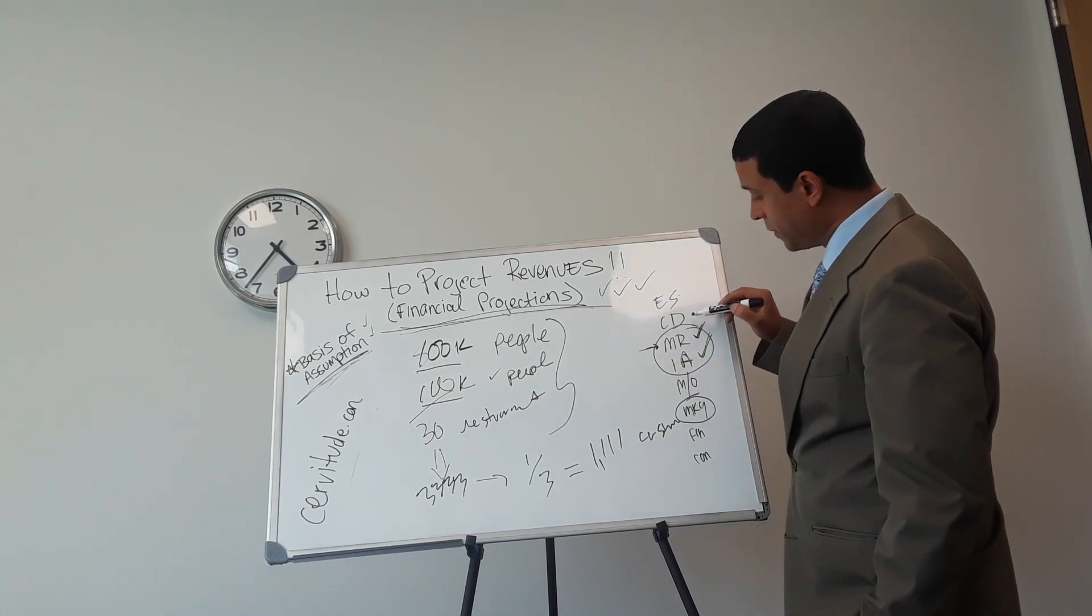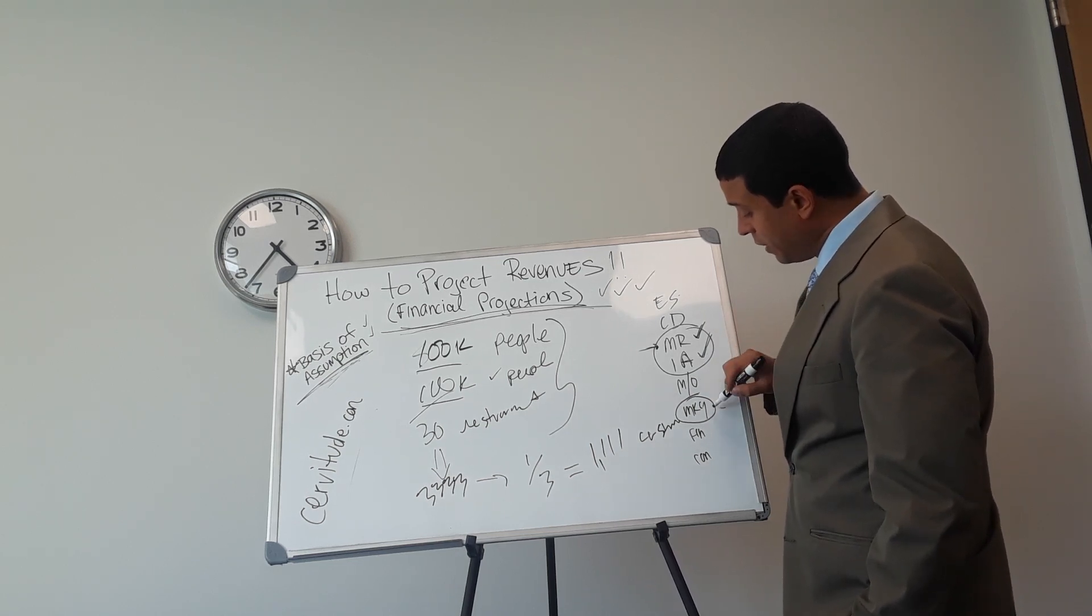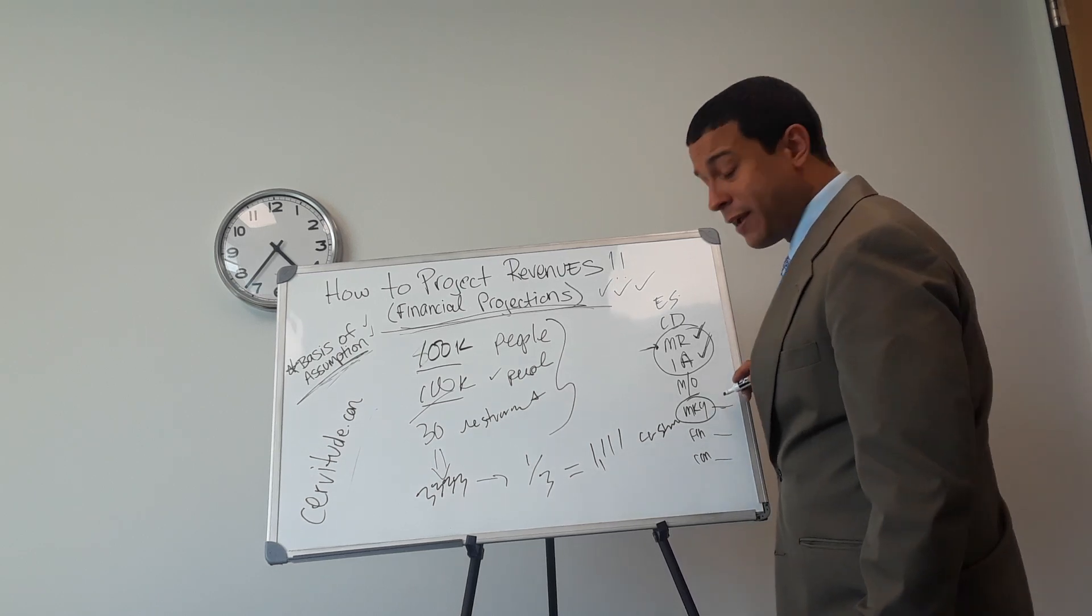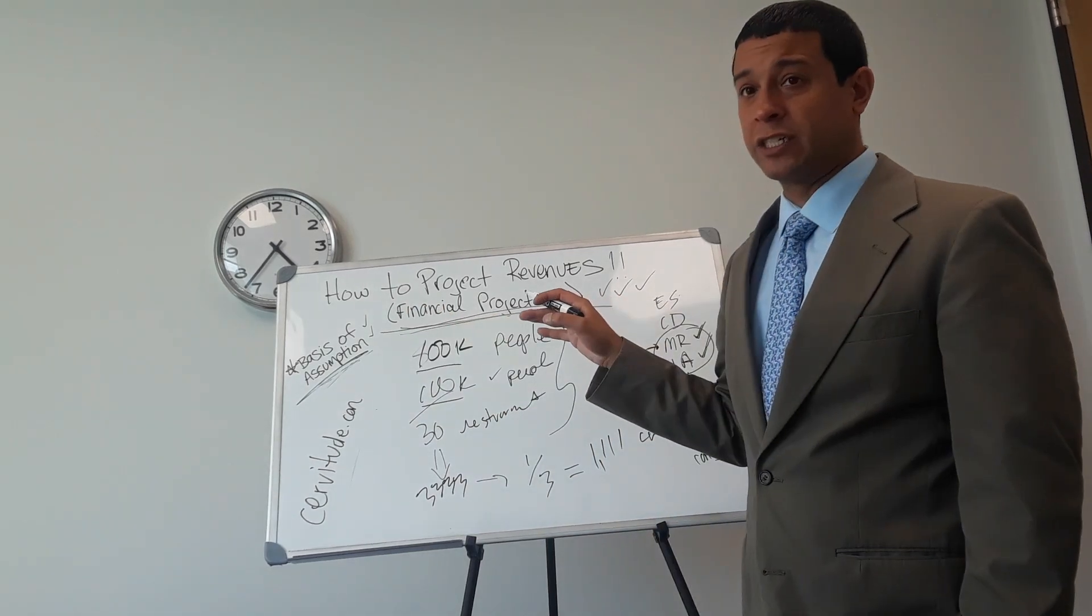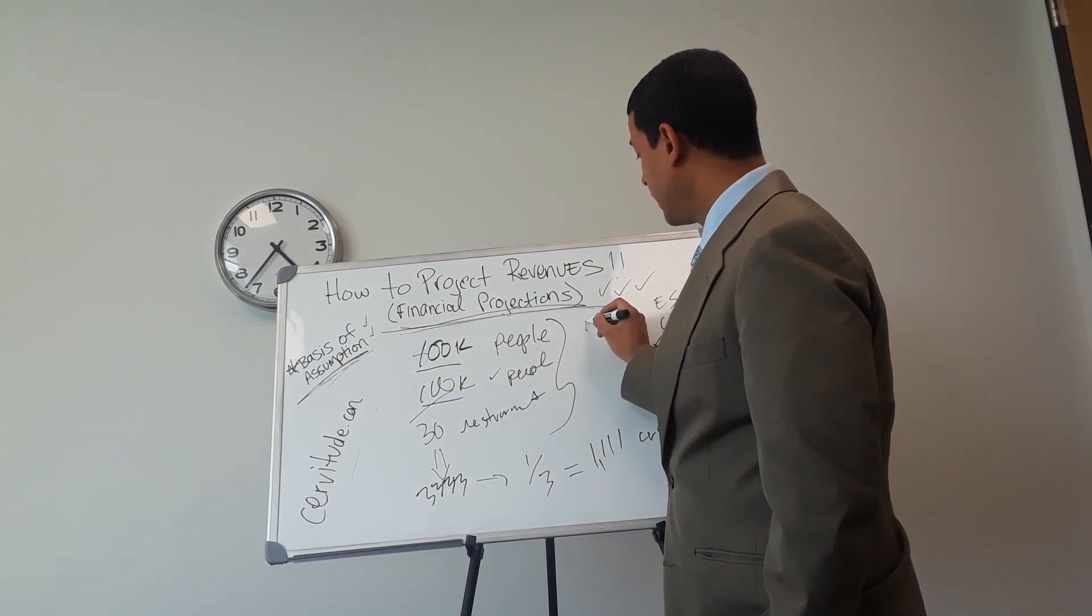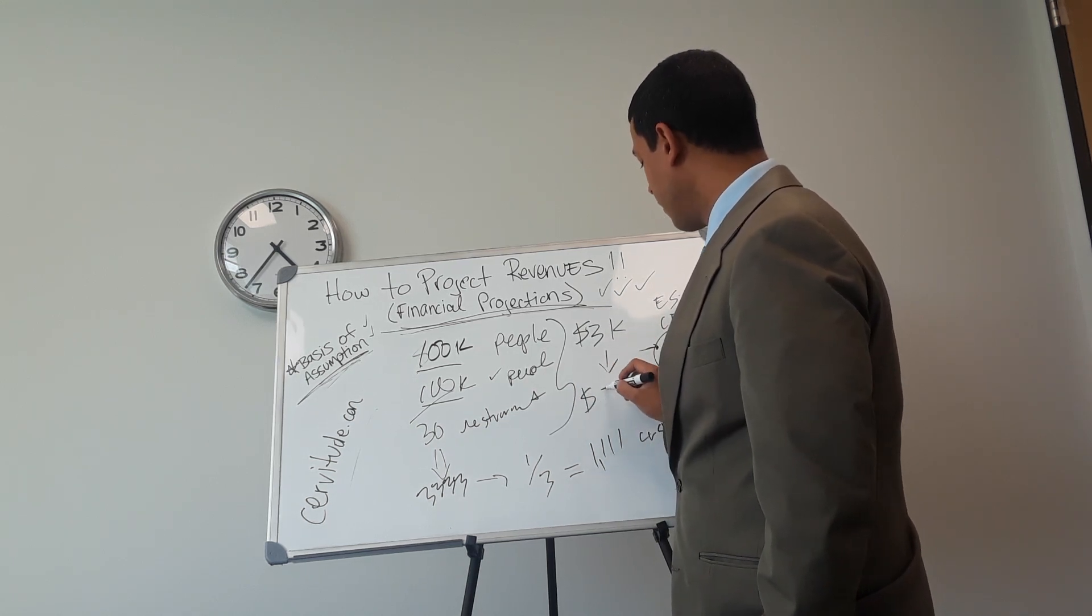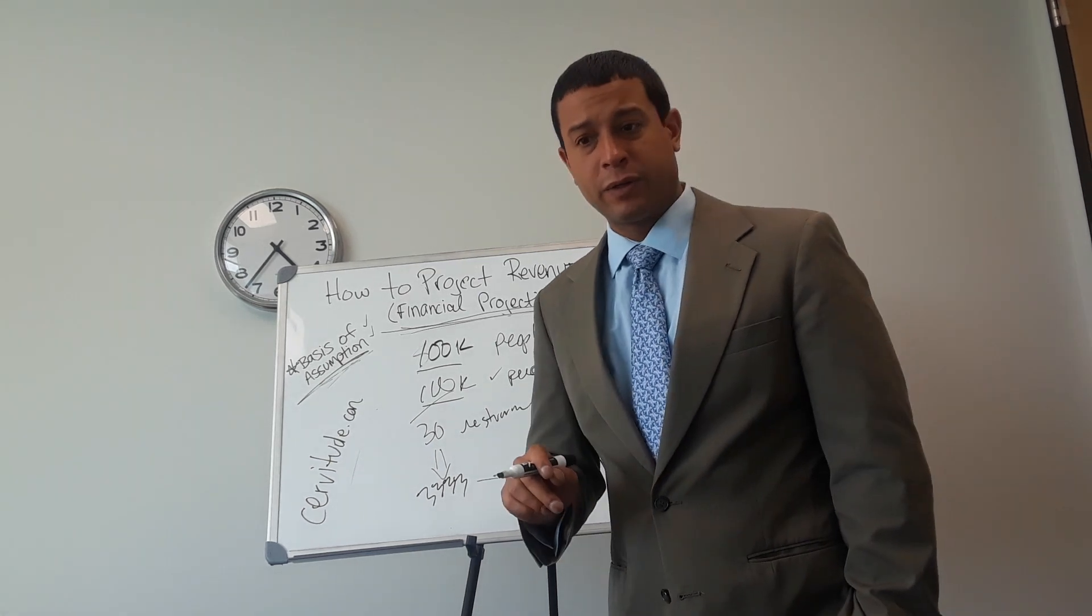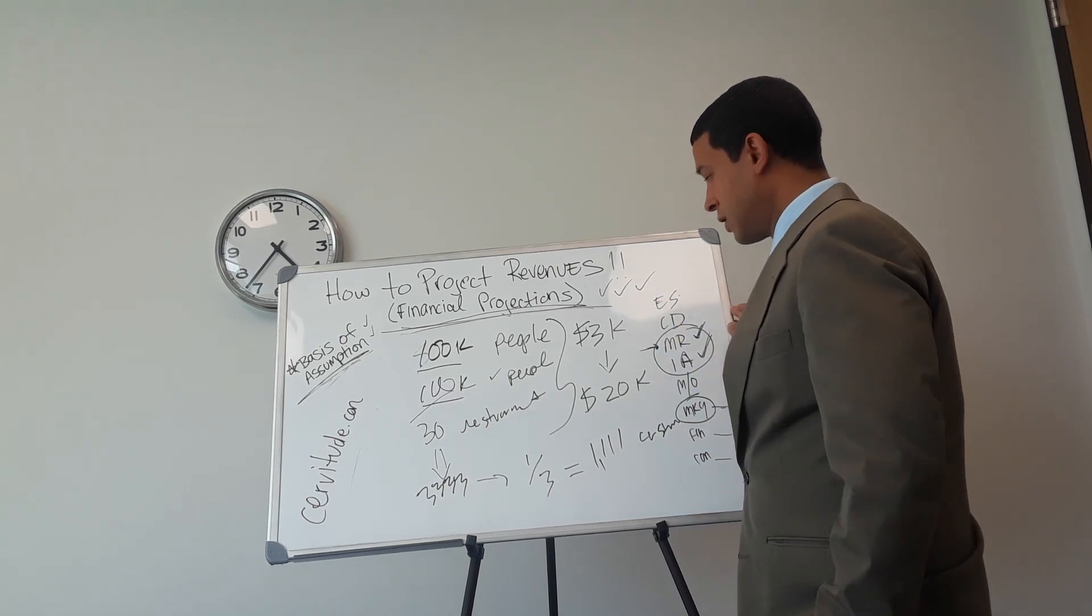Remember, executive summary, company description, market research, industry analysis, management and organizational plan - these are your people. This is your marketing plan, your financial projections, your conclusion. Your marketing plan is directly correlated to your financial projections. For example, in June, I spent $3,000 on marketing, and we made $20,000 in revenue.